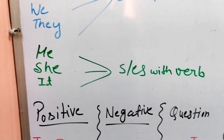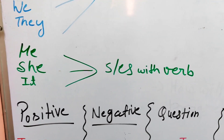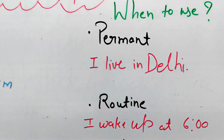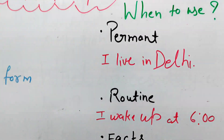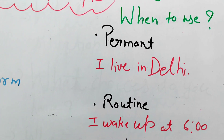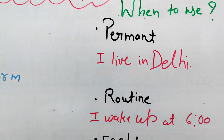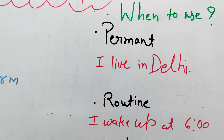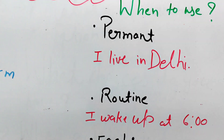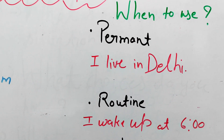With he, she, it — you use the verb with 's': he works, she works, it works. And something that is permanent — like 'I live in Delhi' — this is a permanent situation. I study in — that is also a permanent situation.